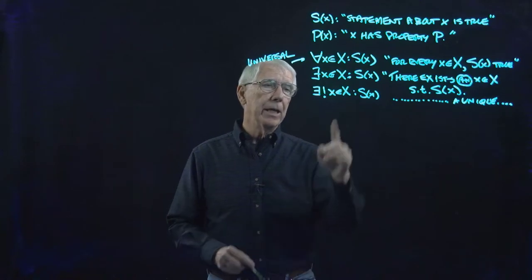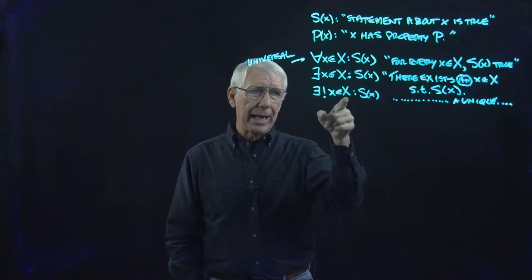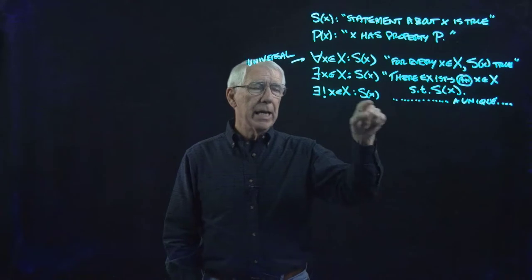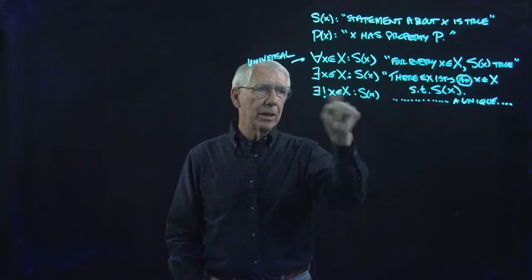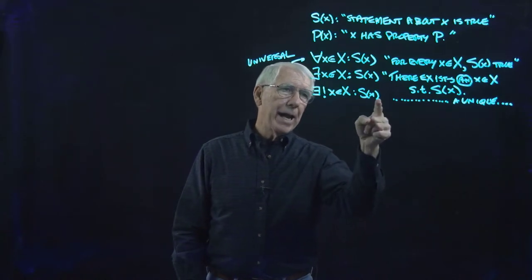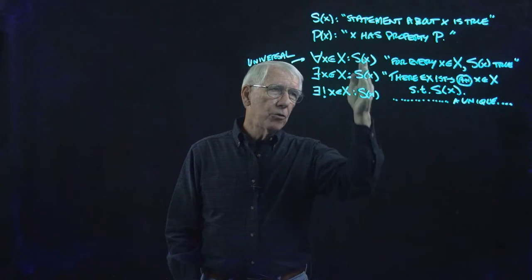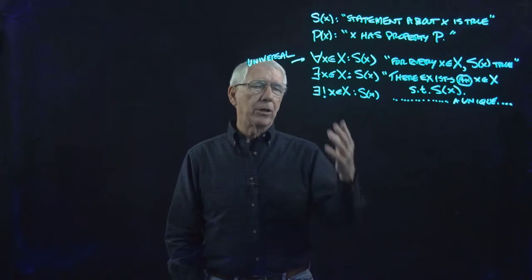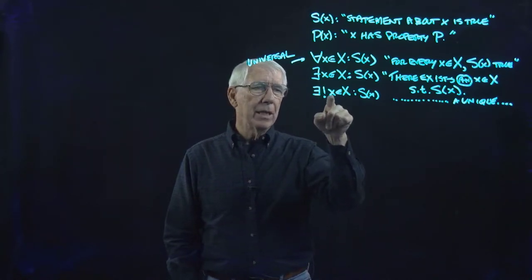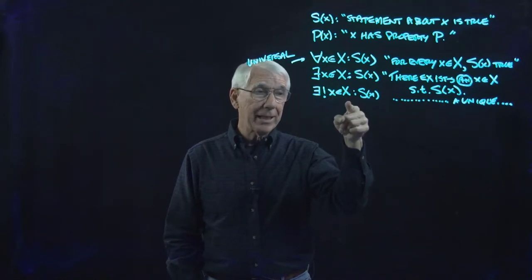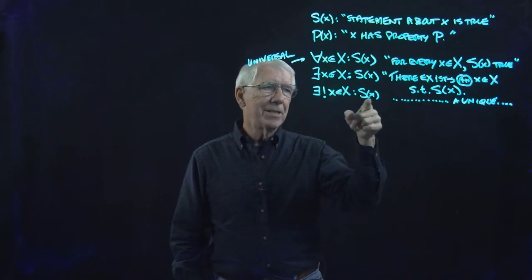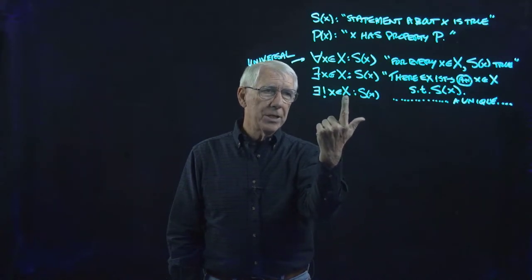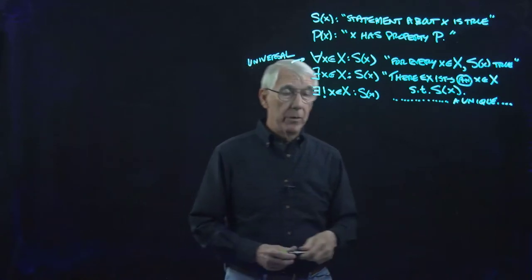It says there exists a unique element of capital X for which this statement is true. Or, if I had P in here, it would be: there exists a unique element of capital X that has property P. The X in the quantified statement is kind of a dummy variable — I could replace it with Z and say there exists a unique Z in capital X such that the statement about Z is true. What matters in the statement is what set capital X we're talking about.